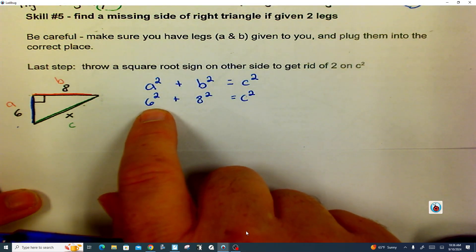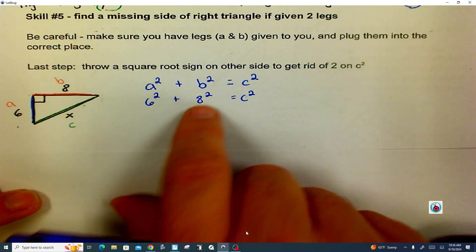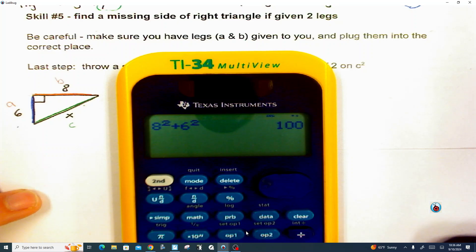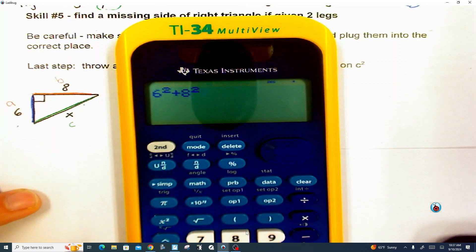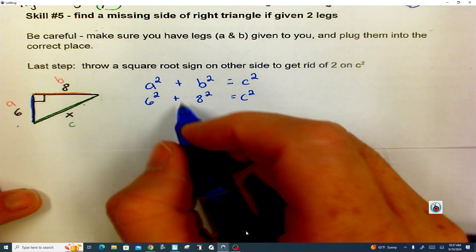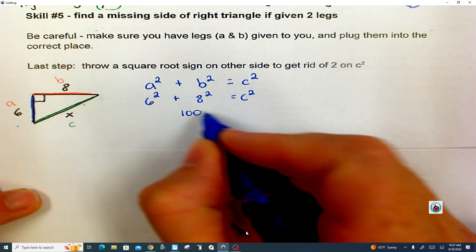Take your calculator out, type in six squared plus eight squared. It's just like what I've showed you on the previous one right there. Let me clear that. Six squared plus eight squared. We're using the X to the second power button right there, and we see that we get 100. So six squared plus eight squared is 100.